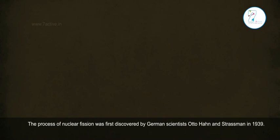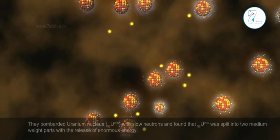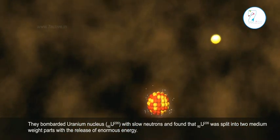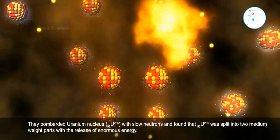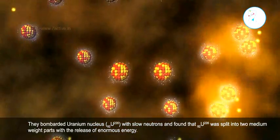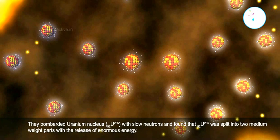Nuclear Fission. The process of nuclear fission was first discovered by German scientists Otto Hahn and Strassmann in 1939. They bombarded uranium-235 nuclei with slow neutrons and found that 92U235 was split into two medium-weight parts with the release of enormous energy.